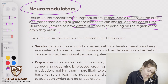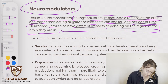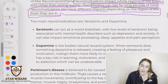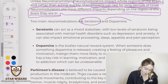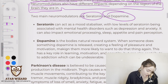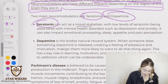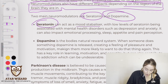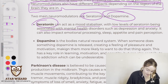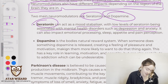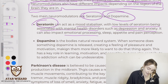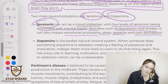Neuromodulators also have different impacts depending on the region of the brain. Two main neuromodulators are serotonin and dopamine. Serotonin can act as a mood stabiliser, with low levels of serotonin being associated with mental health disorders such as depression and anxiety. It can also impact emotional processing, sleep, appetite, and pain perception.